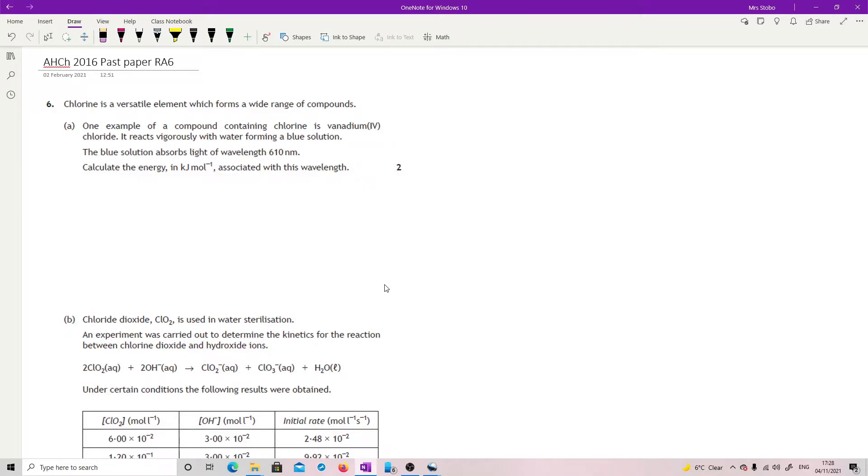Question 6. Chlorine is a versatile element which forms a wide range of compounds. One example of a compound containing chlorine is vanadium chloride. It reacts vigorously with water, forming a blue solution. The blue solution absorbs light of wavelength 610 nm. Calculate the energy in kJ per mole associated with this wavelength.